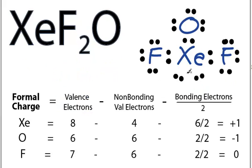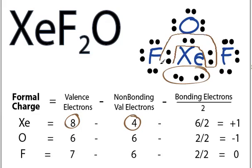For Xenon, we have eight valence electrons on the periodic table, four electrons that are non-bonding, and six valence electrons involved in chemical bonds, which we divide by two. Eight minus four minus six over two gives you a positive one.